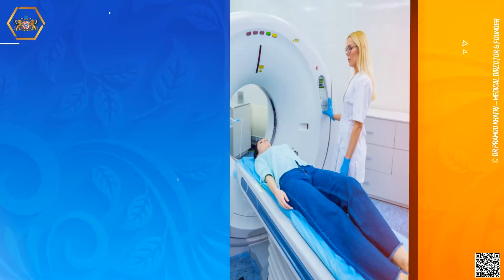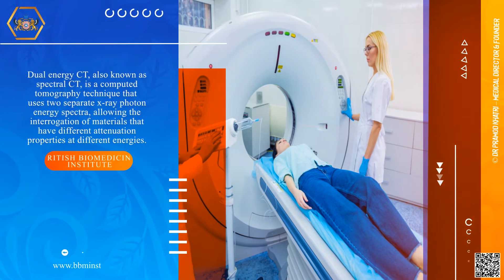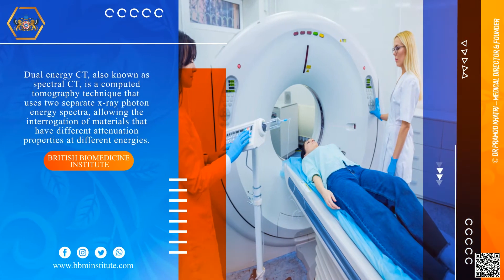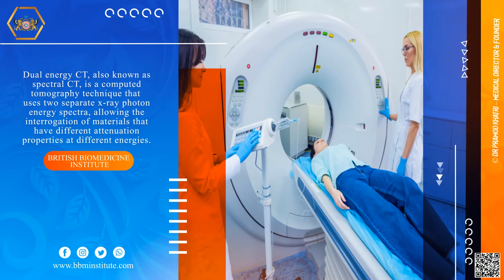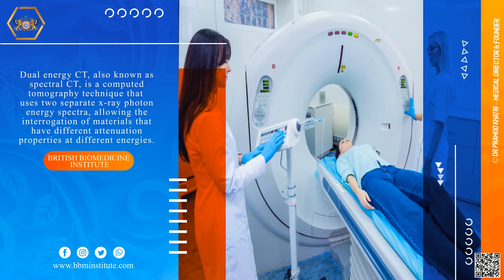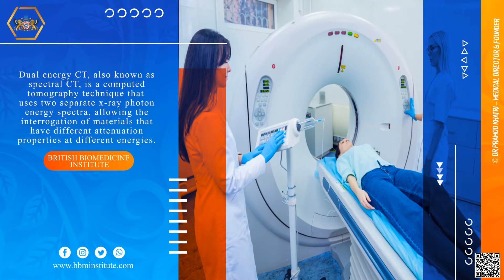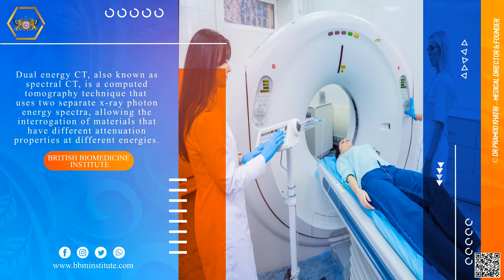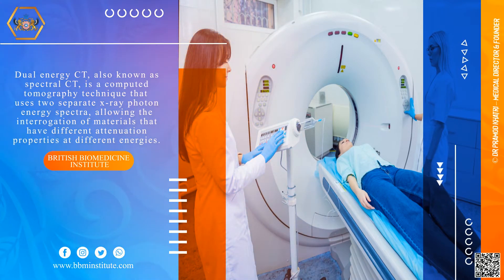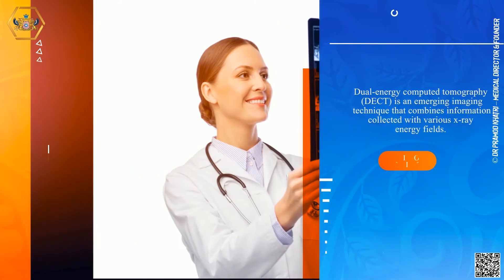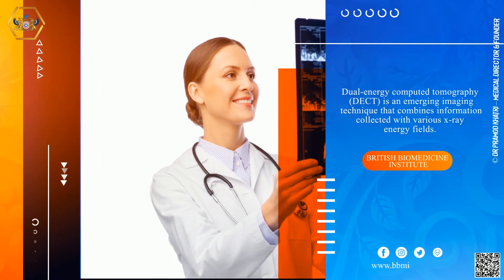Dual Energy CT, also known as Spectral CT, is a computed tomography technique that uses two separate X-ray photon energy spectra, allowing the interrogation of materials that have different attenuation properties at different energies.